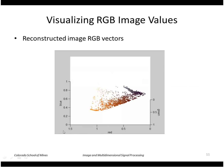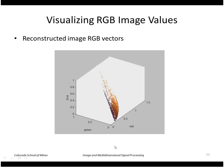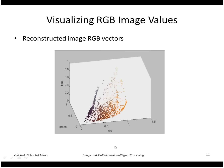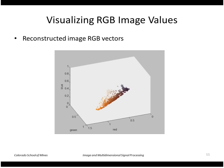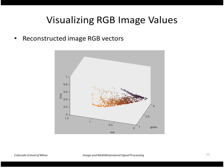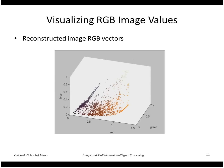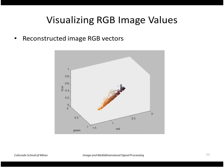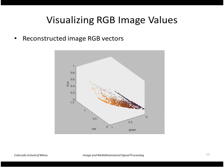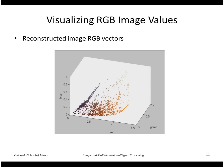An interesting thing to see is the reconstructed RGB vectors plotted in the color cube. As you can see, they tend to lie on a plane — and that's to be expected, because each reconstructed value is a linear combination of two unit vectors, so it lies in a plane.